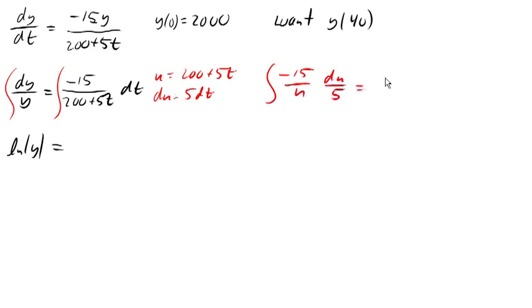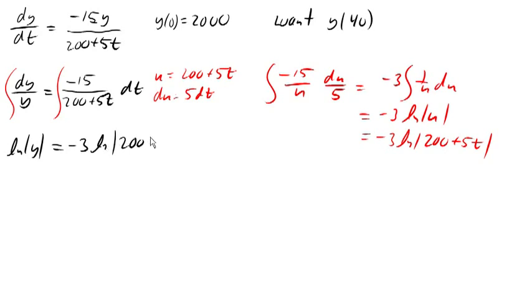It simplifies down to, we can pull out that negative 3 after canceling, 1 over u du. So we integrate, negative 3 ln(u). Back substituting, negative 3 ln(200 plus 5t). So this becomes negative 3 ln(200 plus 5t) plus a constant.